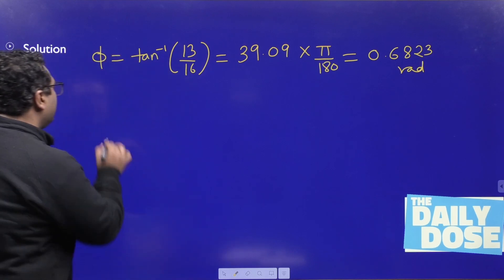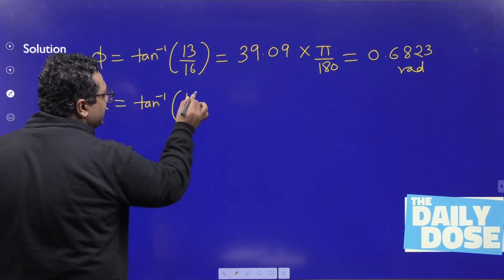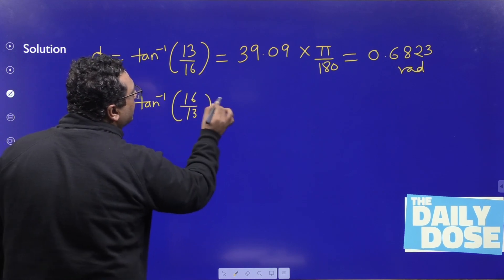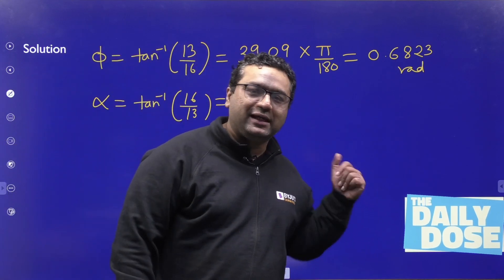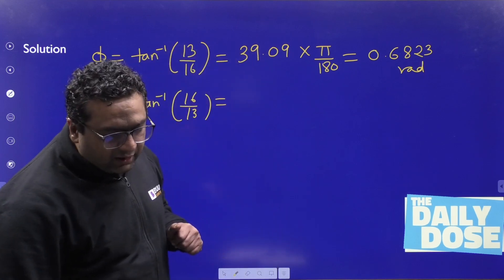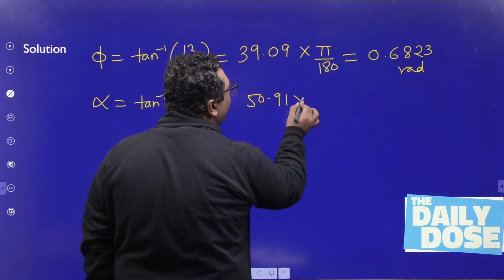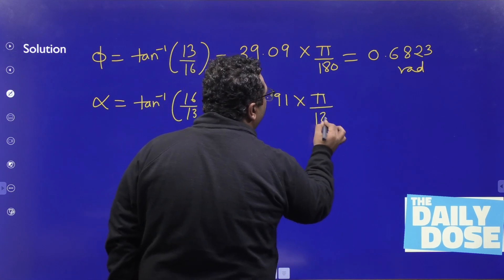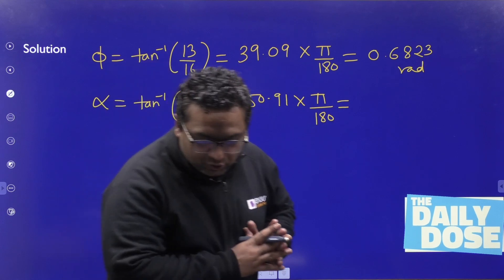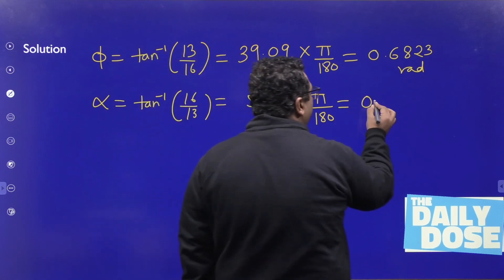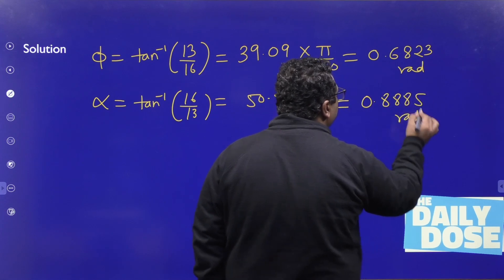For alpha: alpha = tan⁻¹(16/13). The answer comes out to be 50.91 degrees. Converting to radians by multiplying with π/180, you get alpha = 0.8885 radians.